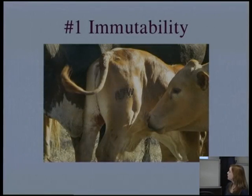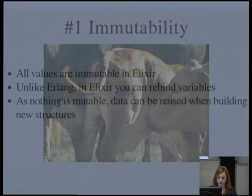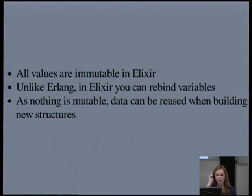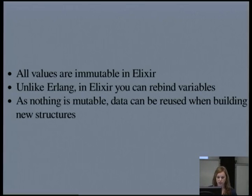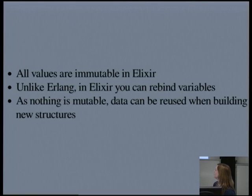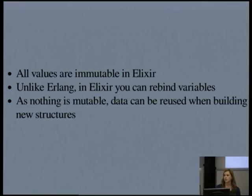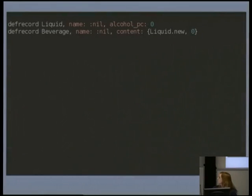The first functional area I want to look at is immutable data, or data that doesn't change. All values are immutable in Elixir — lists, tuples, records, strings, whatever, all immutable. However, unlike in Erlang, it doesn't have single assignment, so in Elixir you can rebind variables. You might think immutable data is a fairly inefficient way to go about things, but actually, because nothing is mutable, there are some optimisations that can be made — parts of structures can be reused where only one part has changed. Let's have a look at an example.